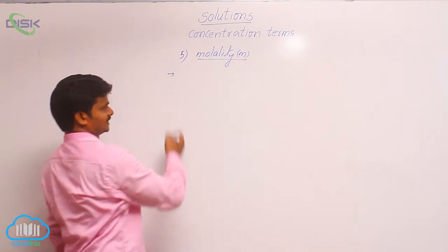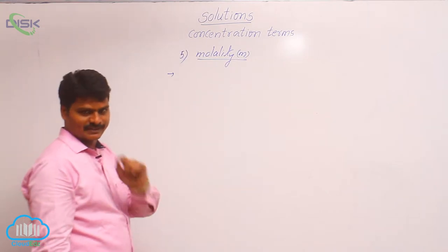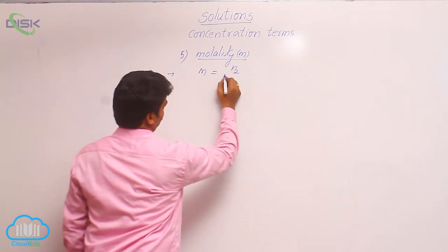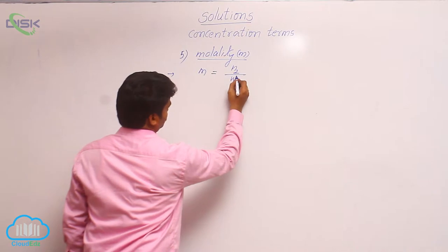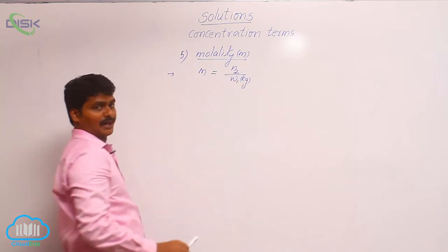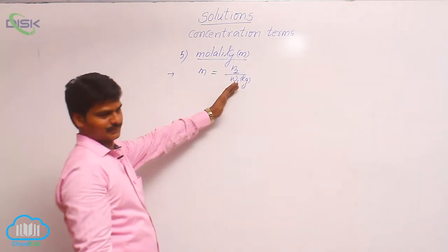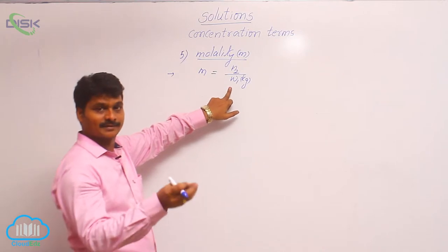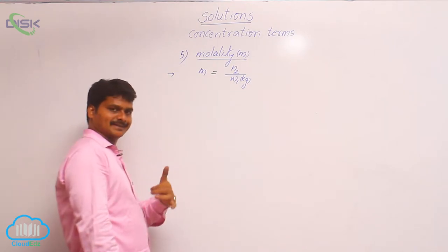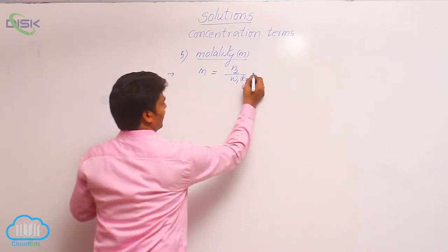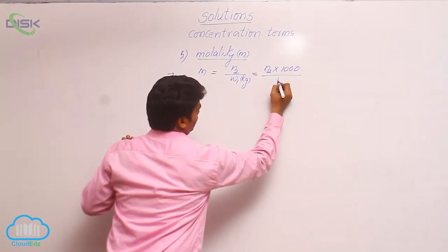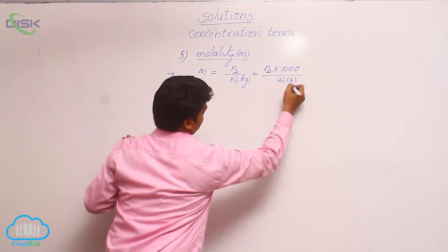How to define molality? Molality can be defined using its formula. The formula for molality is: m = N2 / W1(kilograms). Here, N2 means number of moles of solute, and W1 means mass of solvent in kilograms. If the mass of solvent is given in grams, then the formula becomes m = N2 × 1000 / W1(grams).